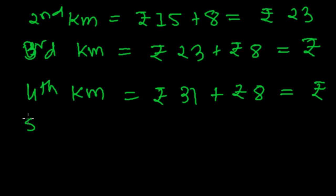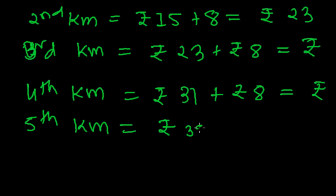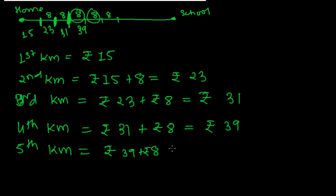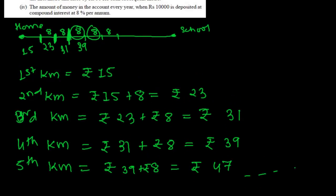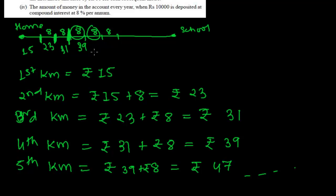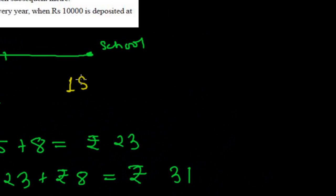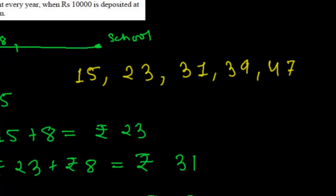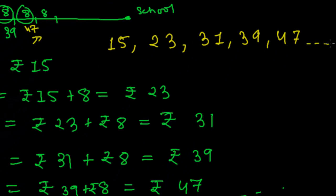For the fifth kilometer, up to fourth kilometer you have already paid 39 rupees, and for the fifth kilometer you pay 8 rupees again. So now you have paid 47. So like this, you keep paying on. So what we get: the list is 15, 23, 31, 39, 47, and so on.